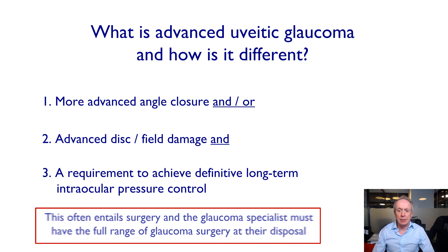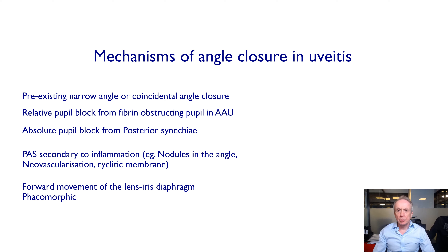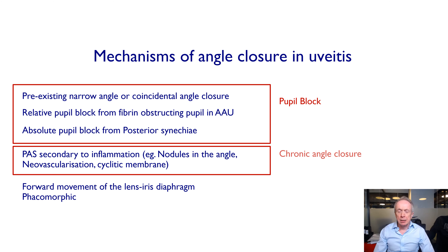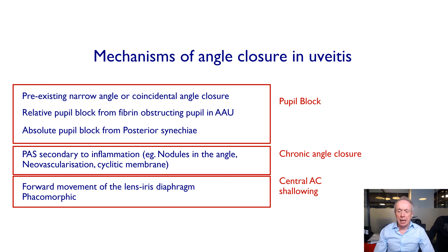Angle closure and uveitis require special consideration as it is potentially devastating. There are three broad mechanisms with different management and different implications: the pupillary block group, chronic synechial angle closure, and central anterior chamber shallowing with forward movement of the lens-iris diaphragm, or phacomorphic.